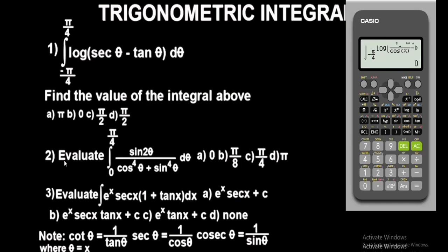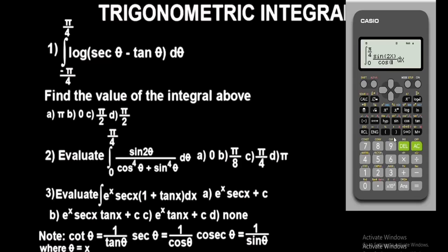Now let's move to Question 2. Evaluate the definite integral — bring out the definite integral sign. The upper limit is pi over 4 and the lower limit is zero. In the center, the function is a fraction: sin(2x) on top — theta is x, close the bracket — over cos to the power of 4 theta on the bottom.